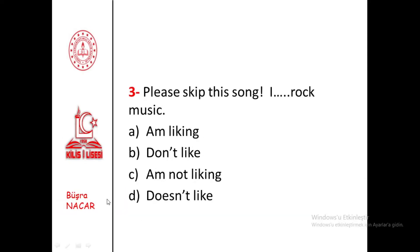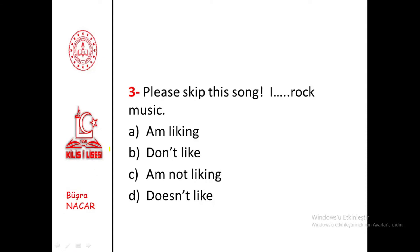Please skip this song. I don't like rock music. Since it's used negatively — 'I don't like rock music' — remember, the verb 'like' is a non-action verb because it expresses feelings, so it doesn't take -ing. We immediately eliminate the -ing options. With the subject 'I,' does it take 'don't' or 'doesn't'? Of course it takes 'don't.' The answer is B.